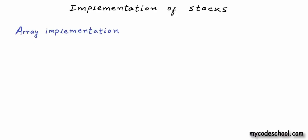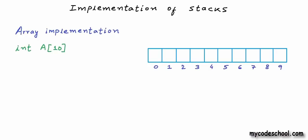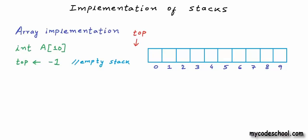Let's say I want to create a stack of integers. I can first create an array of integers — I'm creating an array of 10 integers here, naming it A. I'll use this array to store a stack. At any point, some part of this array starting from index 0 up to an index marked as 'top' will be my stack. We create a variable named 'top' to store the index of the top of the stack. For an empty stack, top is set to -1.